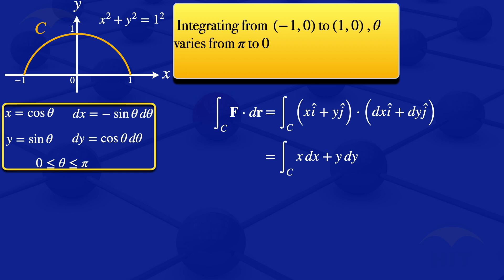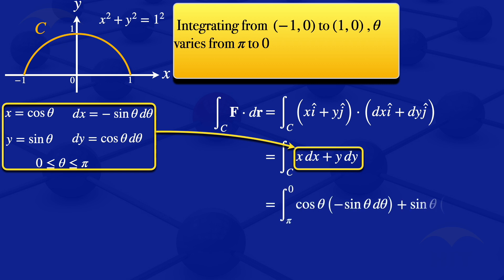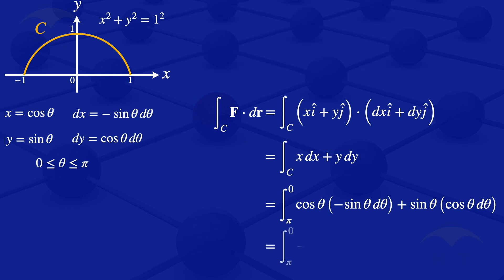With our expressions for x, dx, y, dy, and the limits for theta, we substitute into the line integral. We get the integral from pi to zero of cosine theta times minus sine theta dθ, plus sine theta times cosine theta dθ. Simplifying, this becomes the integral from pi to zero of minus cosine theta sine theta dθ plus cosine theta sine theta dθ.